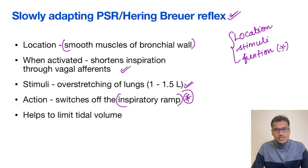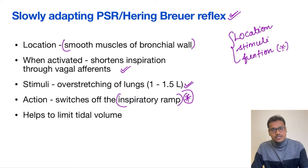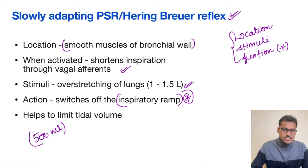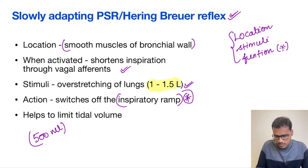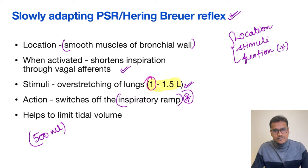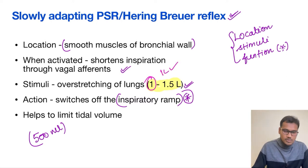The function is to limit the tidal volume. This does not happen in normal individuals during normal breathing, since our tidal volume is normally 500 ml. This reflex gets activated only with over-stretching, around 1 to 1.5 liters — go for 1 liter, as given in West's Respiratory Physiology, which is the preferred answer.